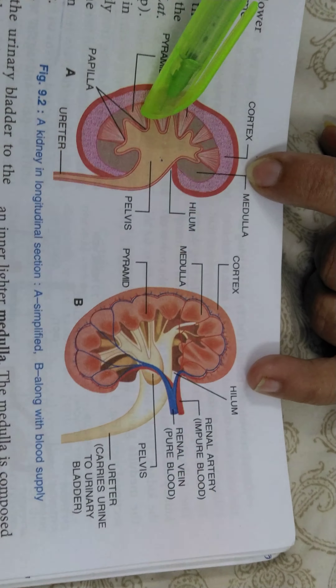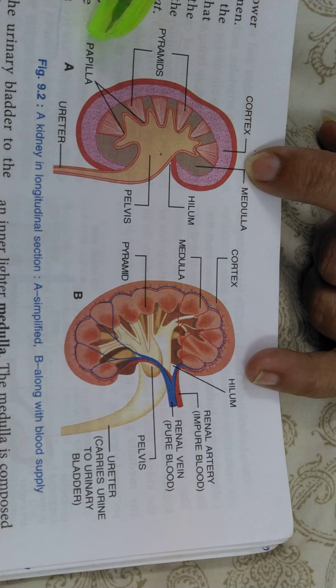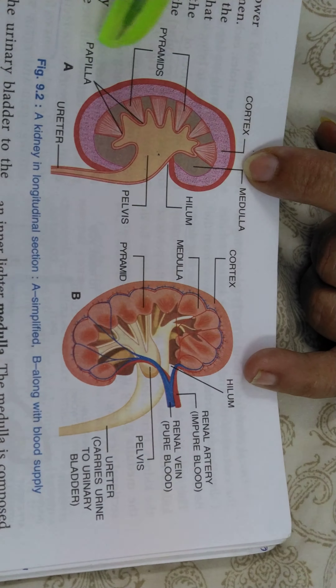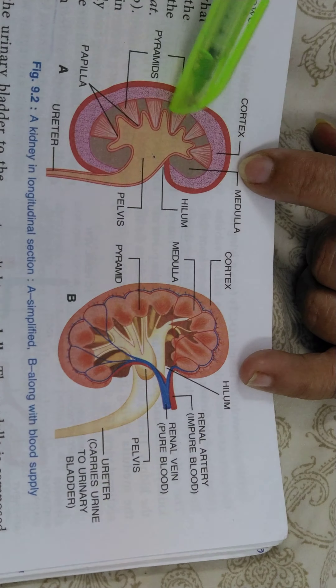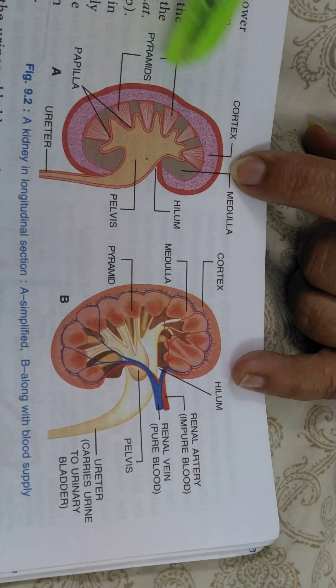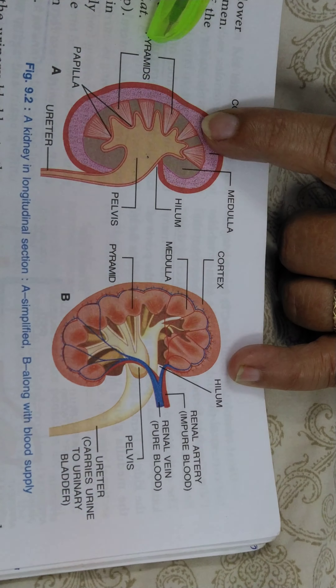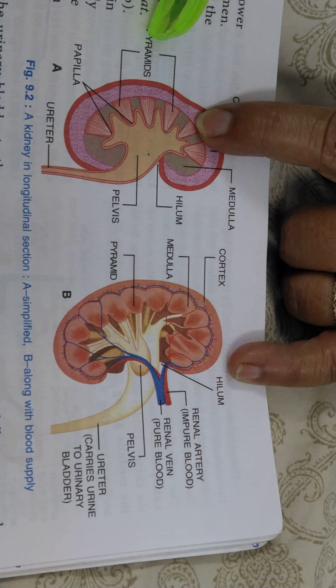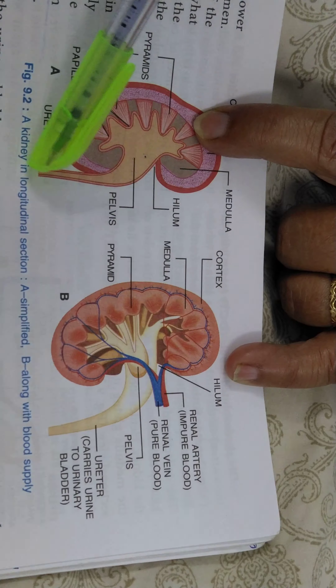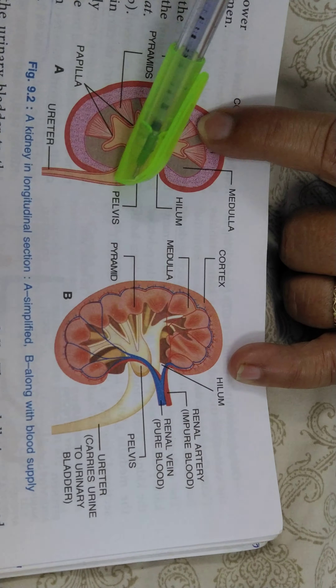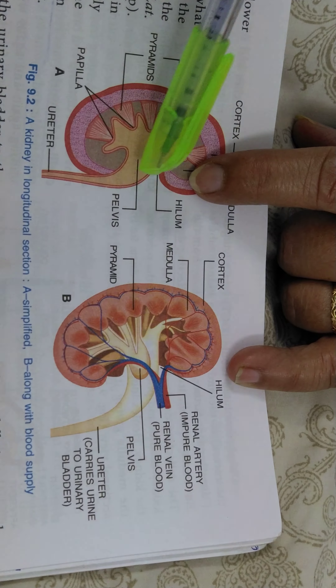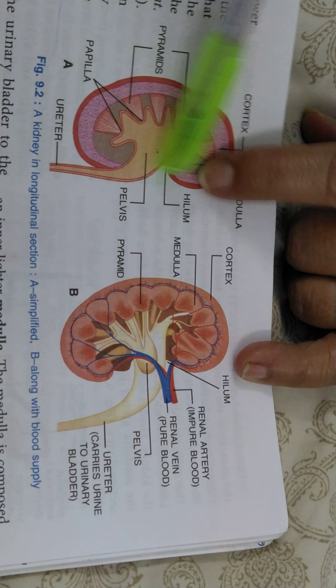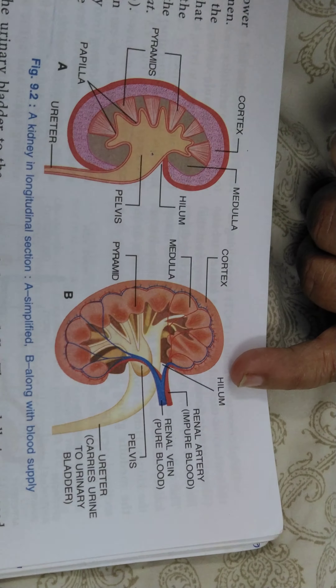The internal part is the medulla, which has convolutions of finger-like projections called papillae. They are attached to the cortex with the help of thread-like structures called pyramids.